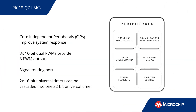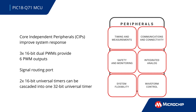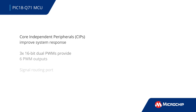The MCUs feature an impressive array of analog and digital peripherals, including a wide selection of core independent peripherals. Among these include three 16-bit dual PWM outputs and two new peripherals for PIC devices: the signal routing port and universal timer. The signal routing port provides enhanced connectivity options between peripherals, while the universal timer module combines signal measurement and hardware limit timer functions in one peripheral.